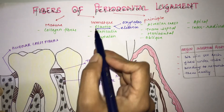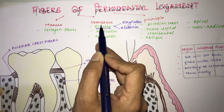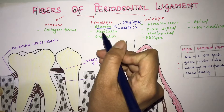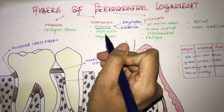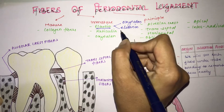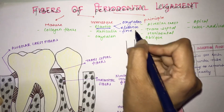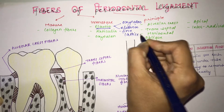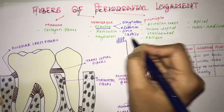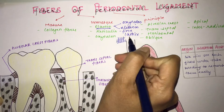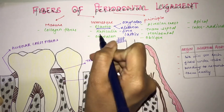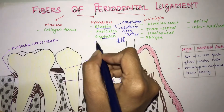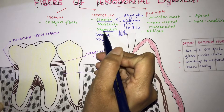Elastin gives the elastic property to your periodontal ligament. The next immature fiber is reticulin, which is a fine immature collagen fiber having a lattice-like appearance — that is, an interlacing of fibers forming a lattice pattern.